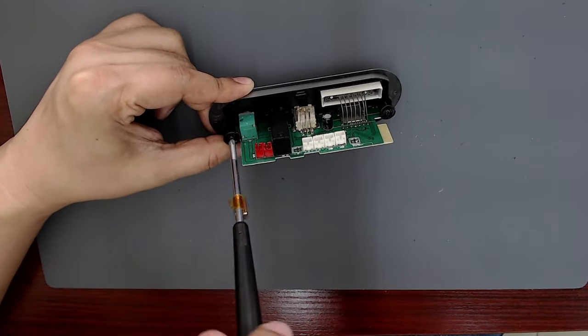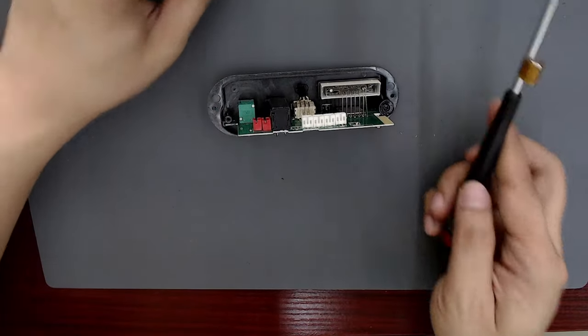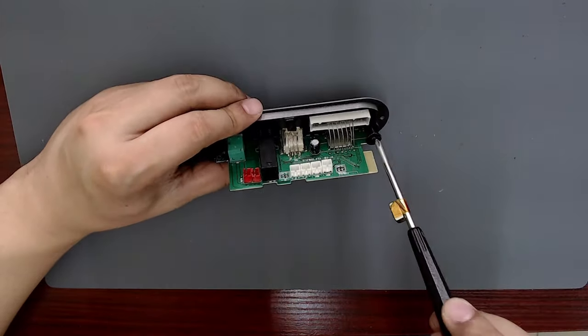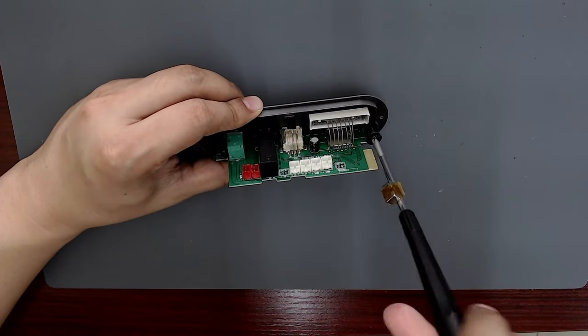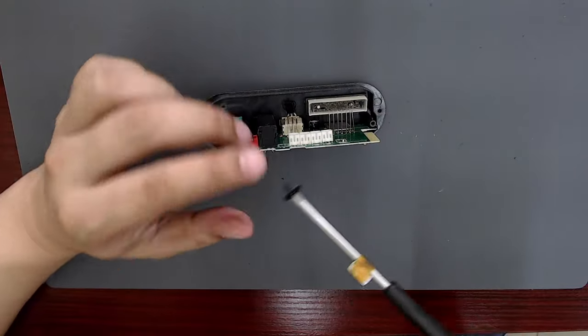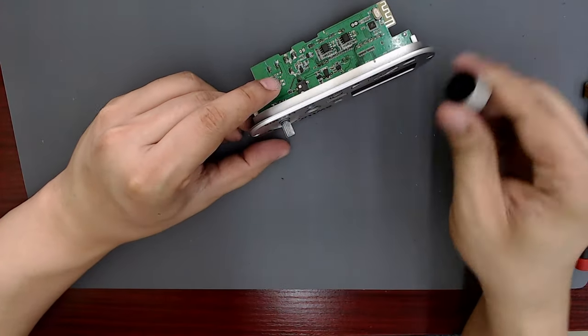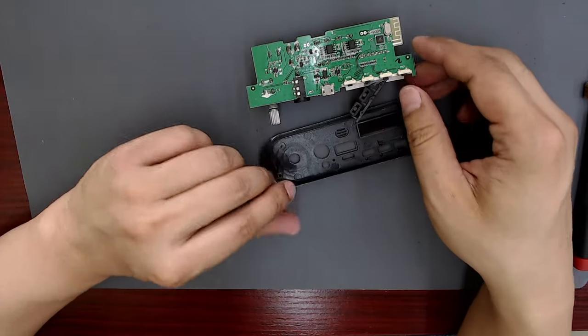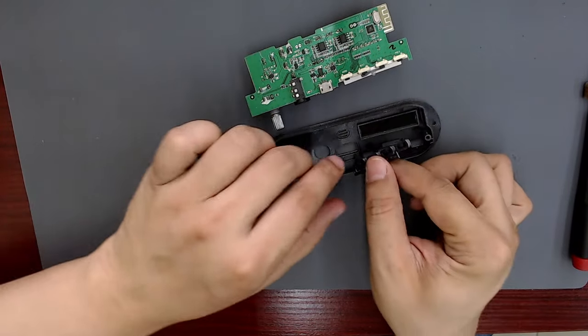I loosen the two screws and separate the board from the front panel plastic. For this kind of product, the quality of the solder and the parts is not very good. I remove the potentiometer knob. This was the last thing holding the board. Now, I can separate the plastic and the board.